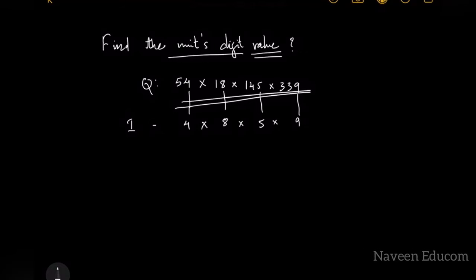So what you have to do is write like this: insert multiply signs in between because we need to multiply in the next step.